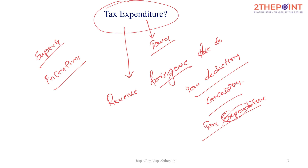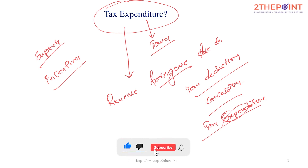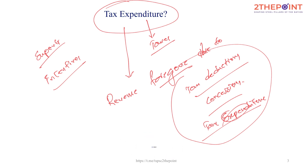We will discuss tax expenditure in more detail in a separate video. So at the end of the day, I just want to make it clear: tax expenditure is the revenue foregone by the government in the form of various tax incentives. So that's it, thank you.